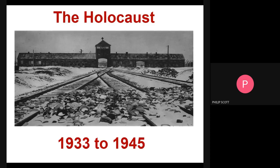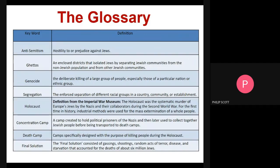Let's run through some key words we'll be using throughout this webinar. Anti-Semitism is hostility or prejudice towards Jewish people — anything anti-Jewish is anti-Semitic. A ghetto is an enclosed district designed to isolate a community in a town or city, in this case specifically Jewish people. Genocide is the deliberate killing of a large group of people, especially those of a particular nation or ethnic group. Segregation is the enforced separation of different racial groups in a country, community, or specific area.